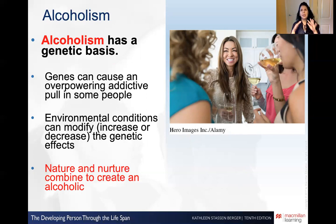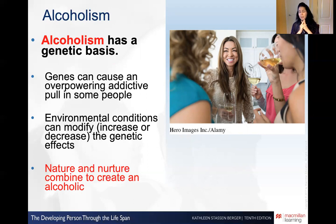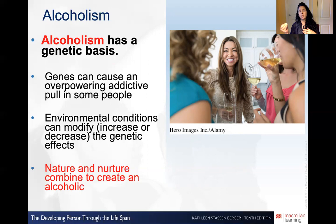Does that mean someone from a family without an alcoholism genetic trait cannot become an alcoholic? No, because we know that socially, if you take an individual not genetically predisposed to alcoholism, but they lose their job, family, home, face depression, and go through a series of events that puts them in a place where they turn to alcohol — can they become an alcoholic? Yes, they can. Both nature — the genetic trait — and nurture — the environmental factors — can both play a role in creating alcoholics.